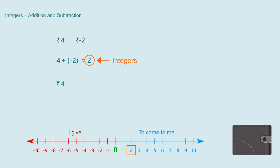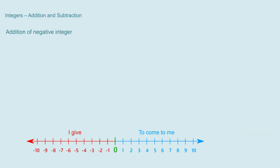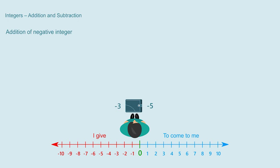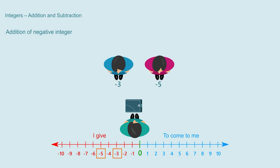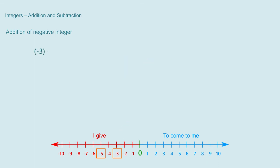Now if I have 4 rupees with me and I get minus 7 rupees, that is I have to pay 7 rupees, then how many rupees do I have? We write this as 4 plus minus 7 equal to minus 3, meaning I have a debt of 3 rupees. Now if I have to add 2 negative integers, suppose I have minus 3 rupees and minus 5 rupees — I owe 5 rupees to someone and 3 rupees to another person. We write this as minus 3 plus minus 5 equal to minus 8, so I owe 8 rupees totally. The answer is again an integer.